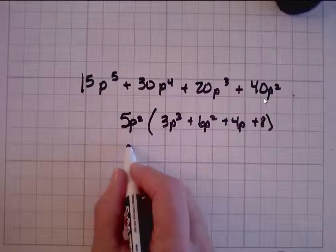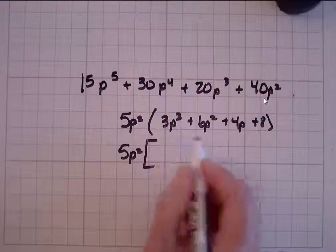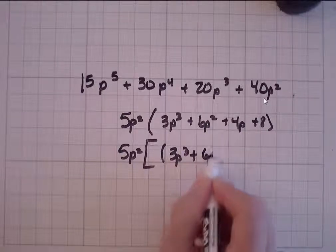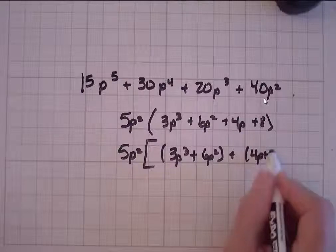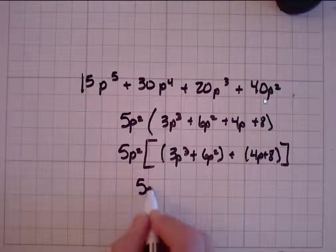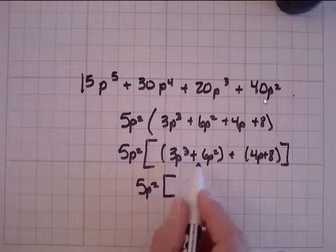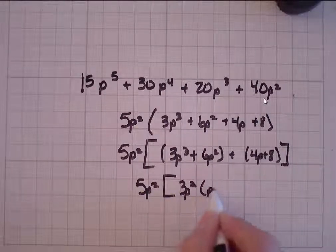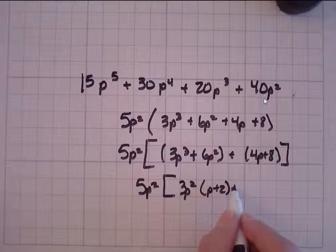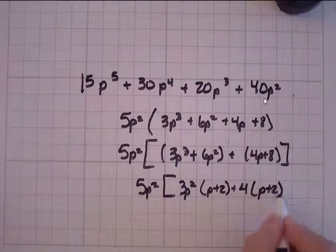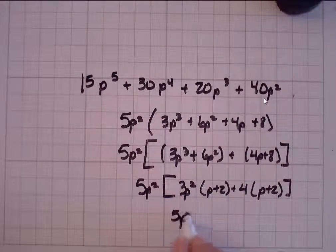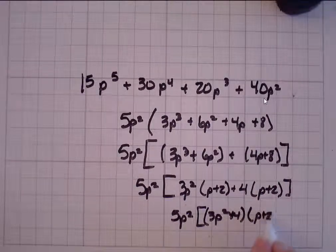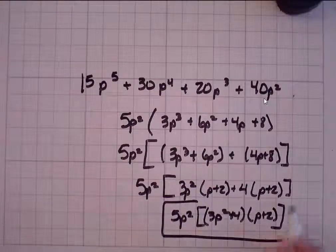Now I have to ask myself, what can I do with that? I have four terms, so I'm going to put those in two sets of parentheses: 3p cubed plus 6p squared, and 4p plus 8, bringing my 5p squared along for the ride. 3p cubed and 6p squared have 3p squared in common, and when I take that out I'm left with p plus 2. 4p and 8 have a 4 in common, and I'm left with p plus 2. So it becomes 3p squared plus 4, times p plus 2, times 5p squared.